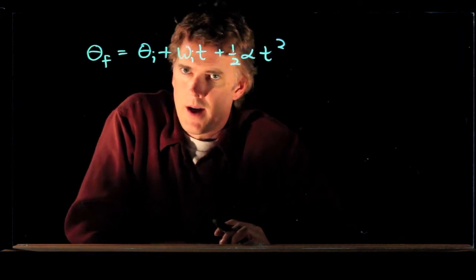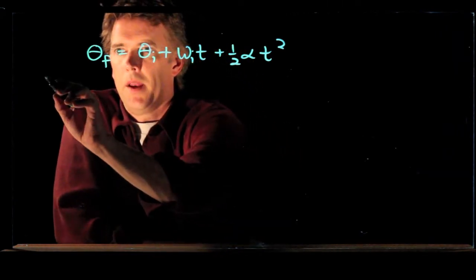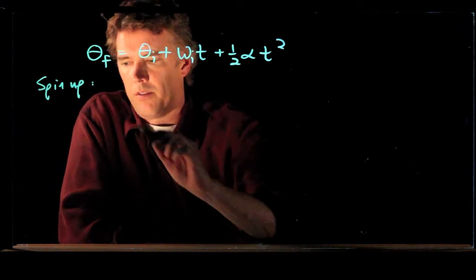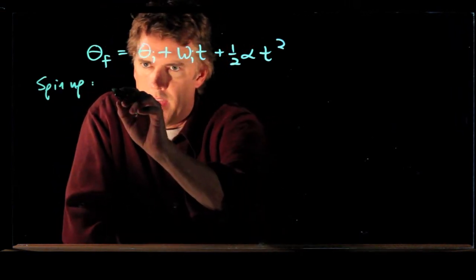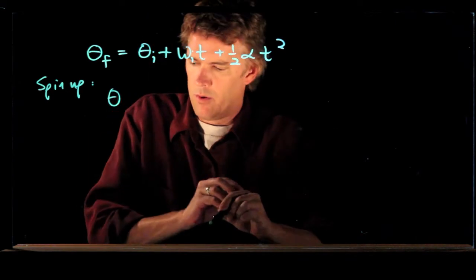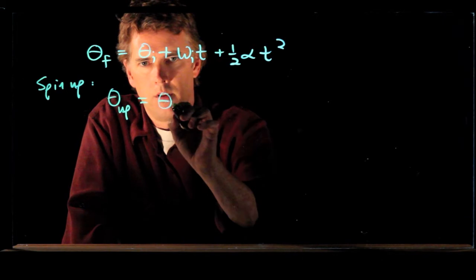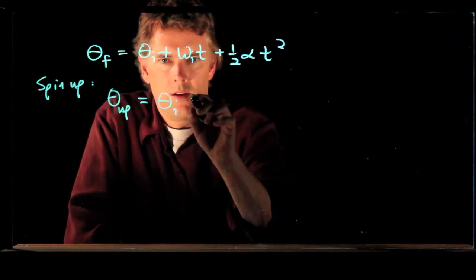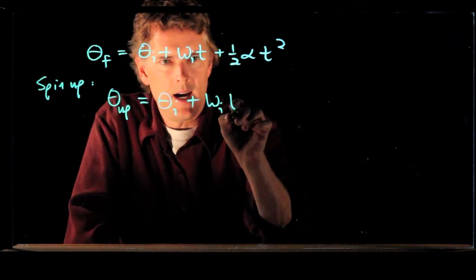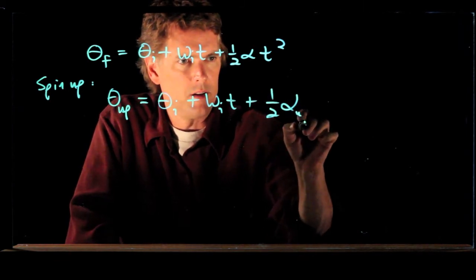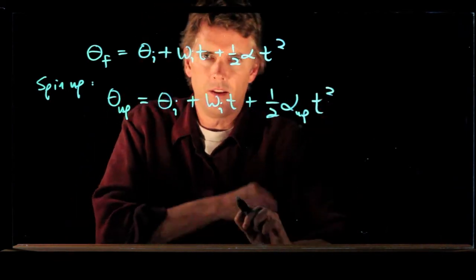Now, if we think about the spin up part of this motion, then what can we say? We can say that theta, how far it rotates on the way up while it's spinning up, is where it starts plus omega i times t plus one half alpha going up times t squared.